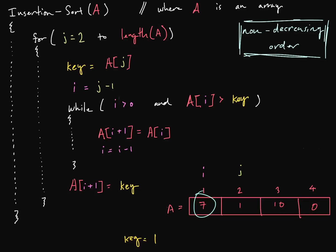Let's do that. We're going to ask ourselves: is 7 greater than 1? It is. So, as we said, we shift 7 to the right, and we also decrement our i value. Now there are clearly no elements left, because i is equal to 0. So we're done with our while loop, and here is where we actually insert the key value into the sorted sub-list — at i plus 1, we insert our key value, which was 1. Now we're done with that iteration of the for loop, and we have a new sorted sub-list.